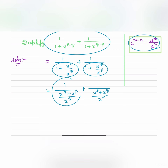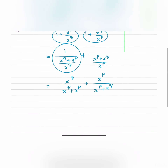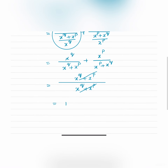Now if we take the first term, x to the power q will go to the numerator, and in the denominator we have x to the power q plus x to the power p. The LCM of these two terms is x to the power q plus x to the power p. Then we get x to the power q plus x to the power p, and we can cancel these two. Then we are having 1. So the simplified form of this is equal to 1.